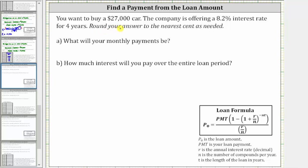You want to buy a $27,000 car. The company is offering an 8.2% interest rate for four years. What will your monthly payment be and how much interest will you pay over the entire loan period? And we're told to round to the nearest cent.